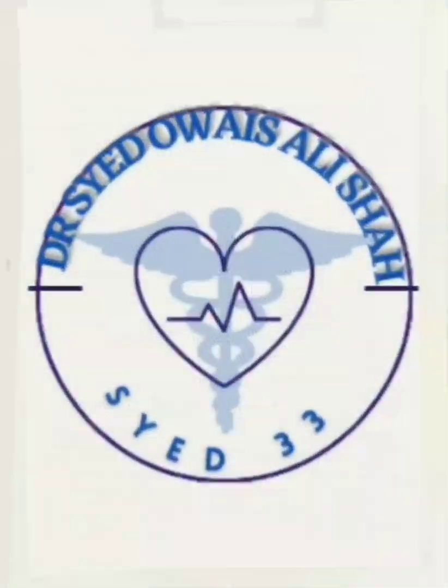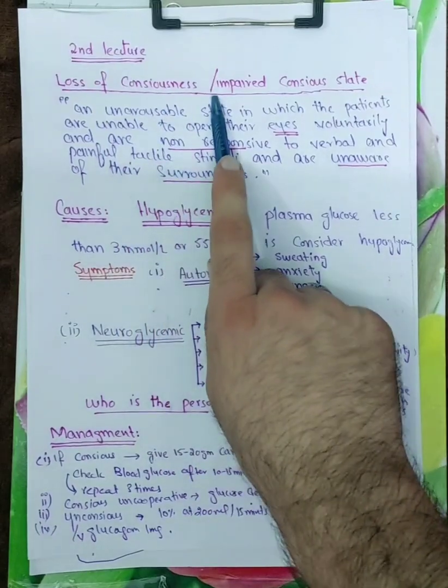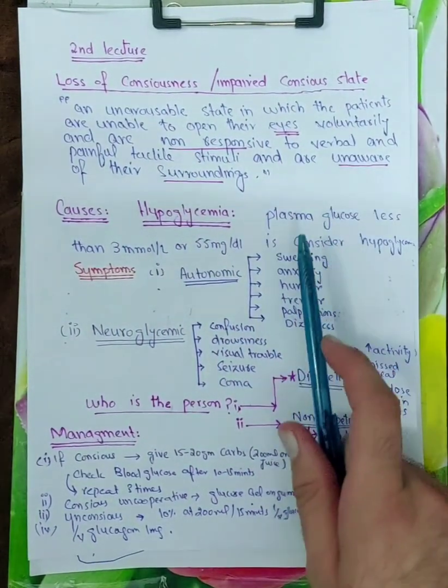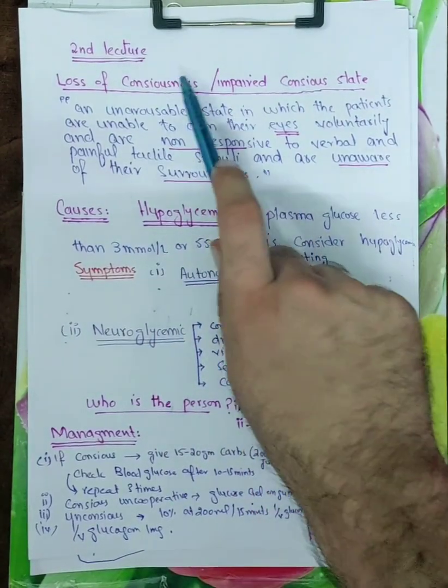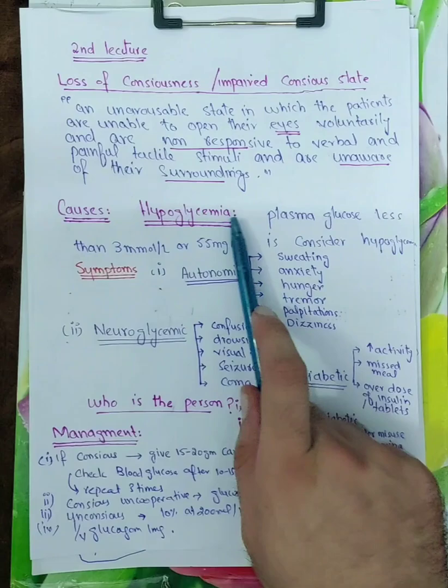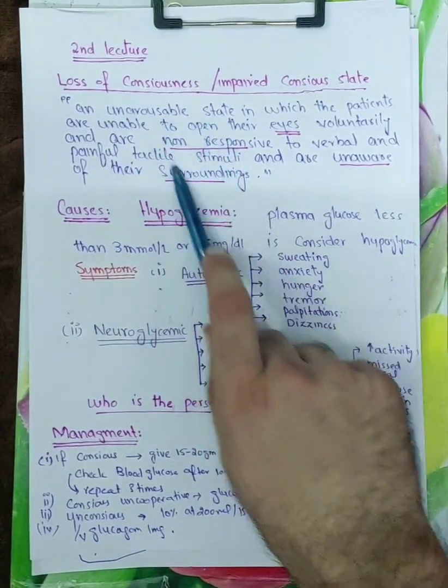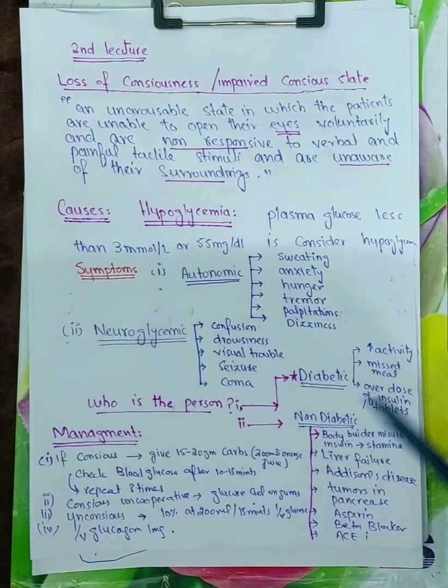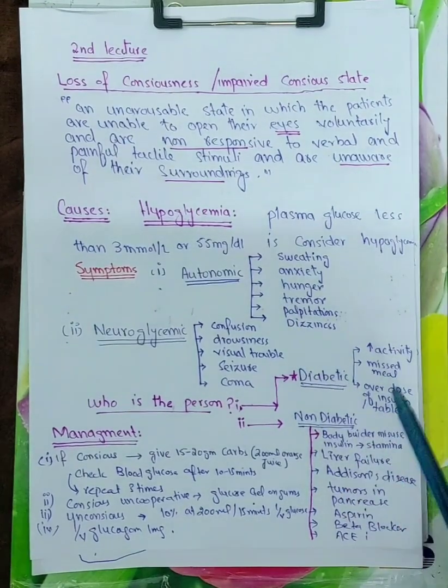Assalamu alaikum bismillahirrahmanirrahim. Today is my second lecture on the topic loss of consciousness or impaired conscious state. Today I will focus on hypoglycemia which leads to loss of consciousness, but before going to hypoglycemia I would like to explain the definition of loss of consciousness because many people ask me to mention the definition for better understanding.